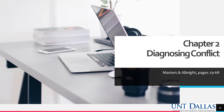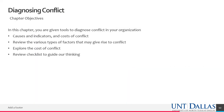In Chapter 2, we're going to look at how you diagnose conflict. When conflict comes up, what do you do to work through it? The objectives include: what are the causes and indicators of conflict, what is the cost of conflict, and reviewing the various types of factors that may give rise to conflict, exploring that cost, and reviewing a checklist to guide our thinking through conflict.